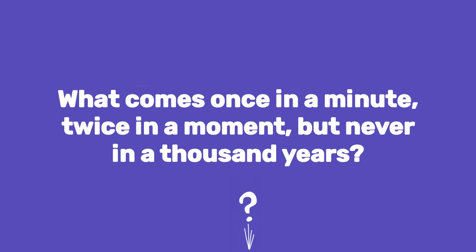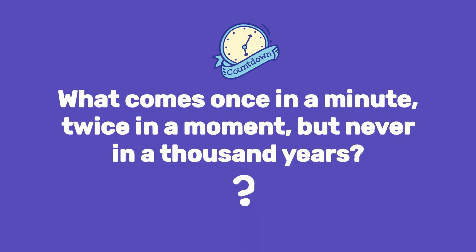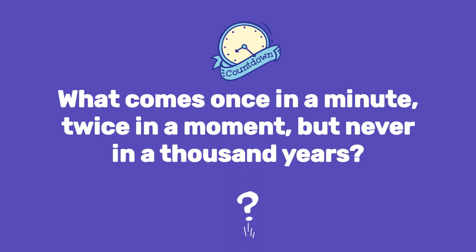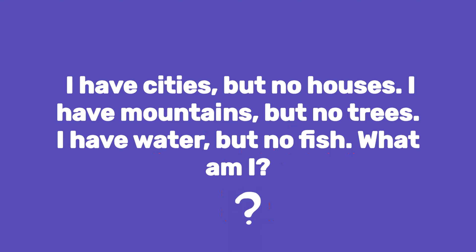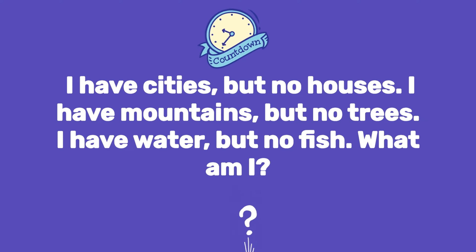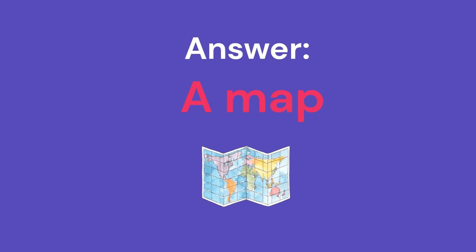Riddle 2: What comes once in a minute, twice in a moment, but never in a thousand years? Answer: The letter M. Riddle 3: I have cities, but no houses. I have mountains, but no trees. I have water, but no fish. What am I? Answer: A map.